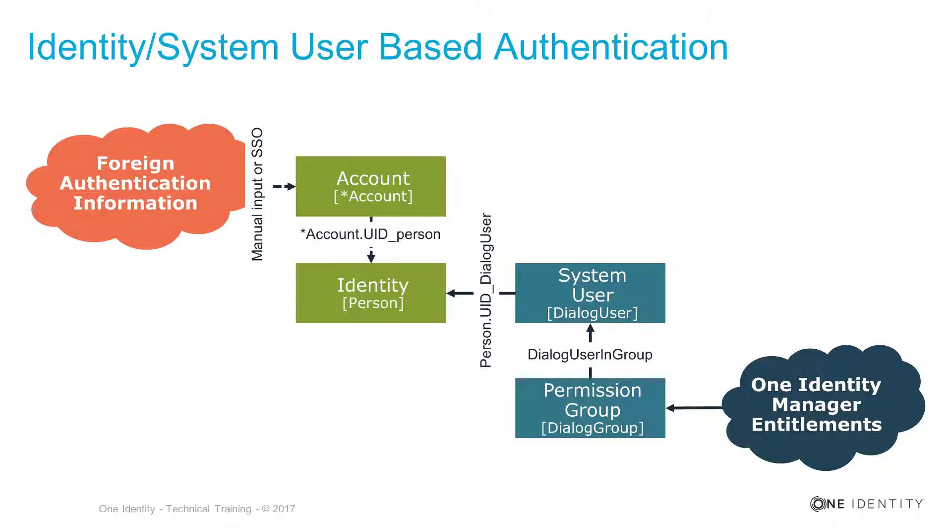In reality, the system user assignment will often be used, especially in situations where we talk about business developers or data administrators — people with more privileges than the normal business user. These people will then just get one system user assigned. And to avoid that everyone needs their own system user and we have to duplicate the permission set, we can just use system user assignments. So, the permission set in Identity Manager is assigned to permission groups, the permission groups are assigned to system users, and this system user can then be assigned to an identity object.